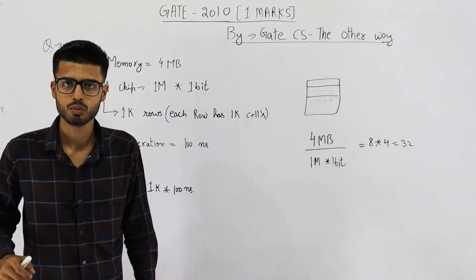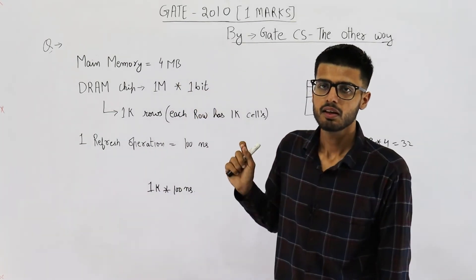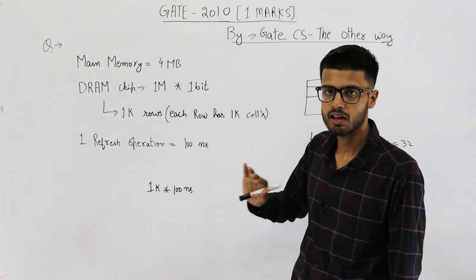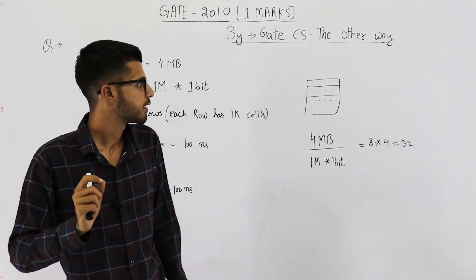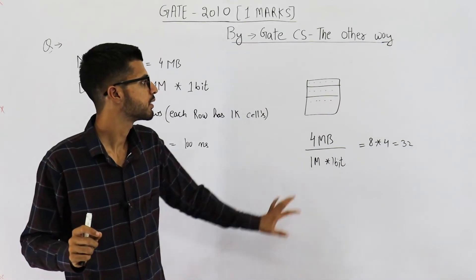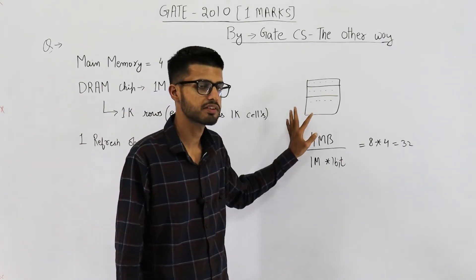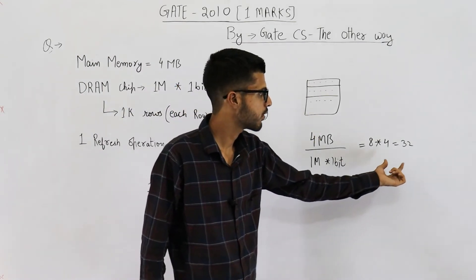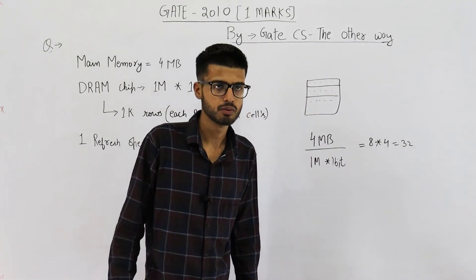Because we have 32 chips. Answer to this question is, each of these chips are individual separate circuits. Any circuit that is required for refreshing a chip is there within this chip. So, each and every chip can be refreshed individually. That means, all of these 32 chips are refreshed in parallel.